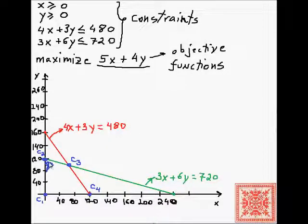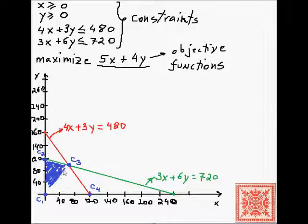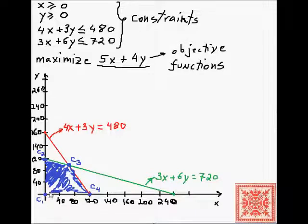The feasible set is the polygon C1, C2, C3, C4, bounded by segments C1C2, C2C3, C3C4, and C1C4.